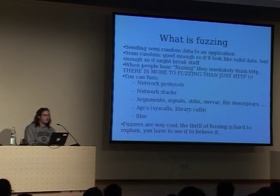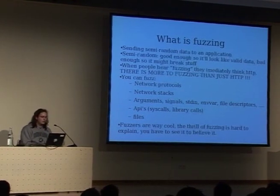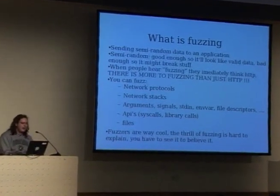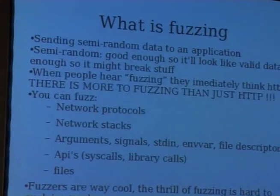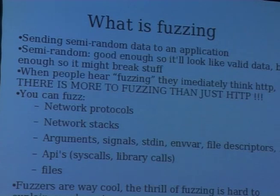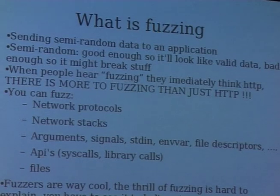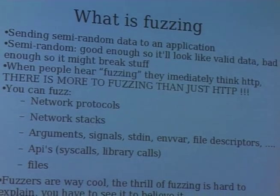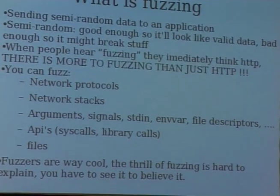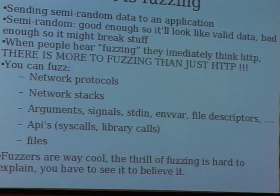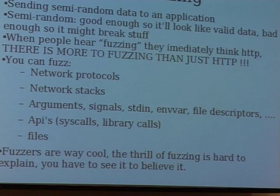Fuzzing is basically where you take a chunk of semi-valid or semi-random data and feed it to an application. Semi-random or semi-valid means it's good enough so the application thinks it's data it can parse. For example, if you've got a file which has a magic number and that magic number isn't there, the parser will say it's not my file. But if that magic number is there, it'll parse it and if you're lucky, it'll break on something.